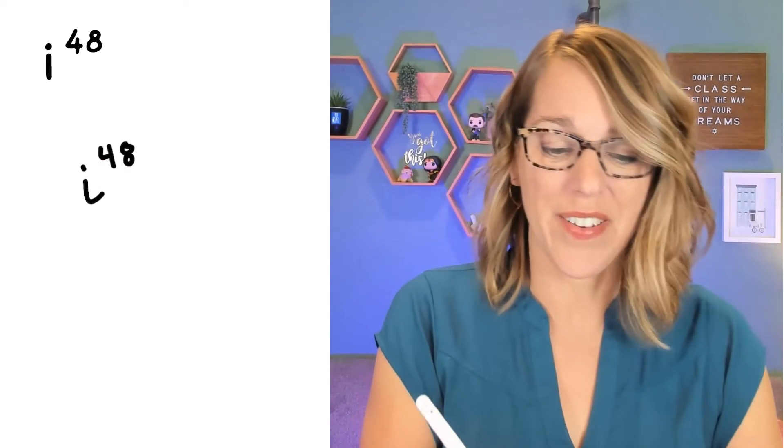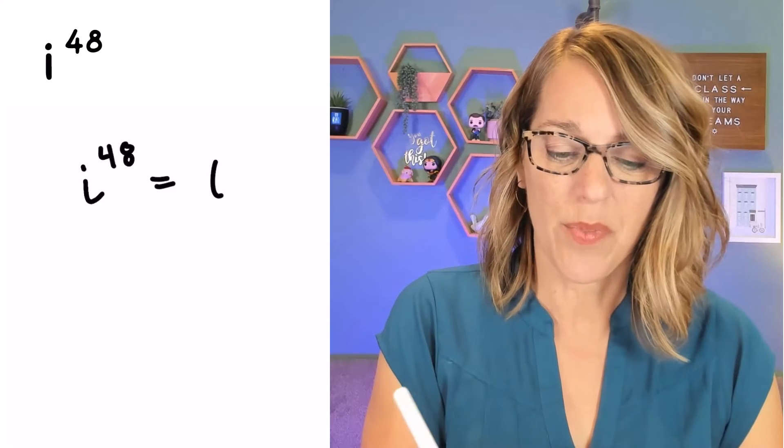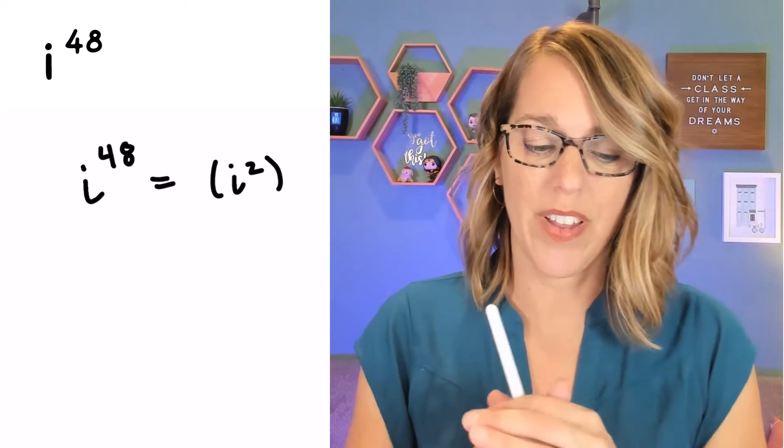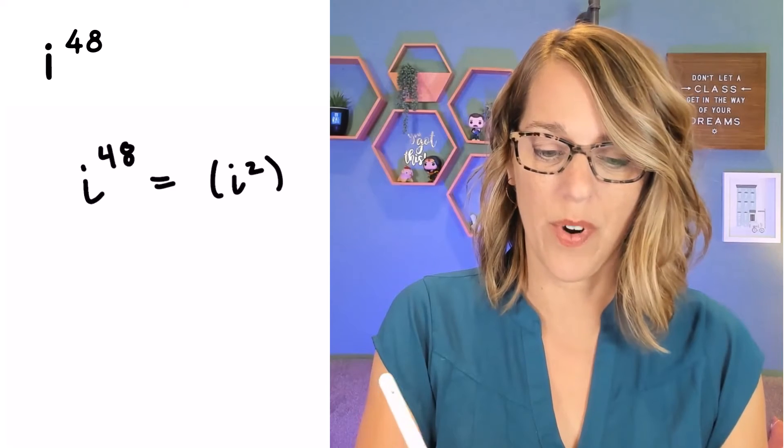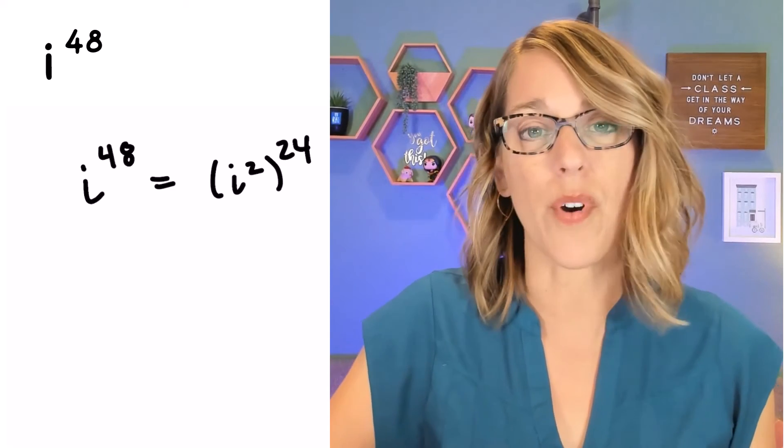The very first thing I'm going to do with this is to write it as a power of i squared. So I'm going to rewrite this as i squared in parenthesis. 48 divided by 2 is 24, so I get i squared to the 24th power.